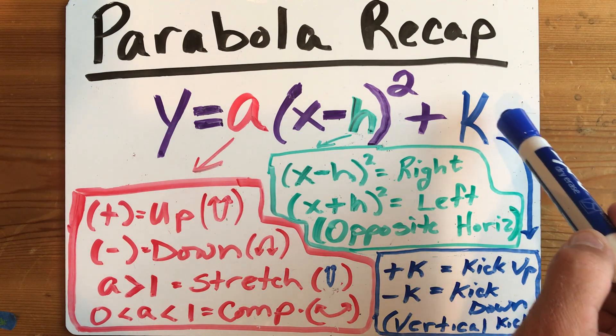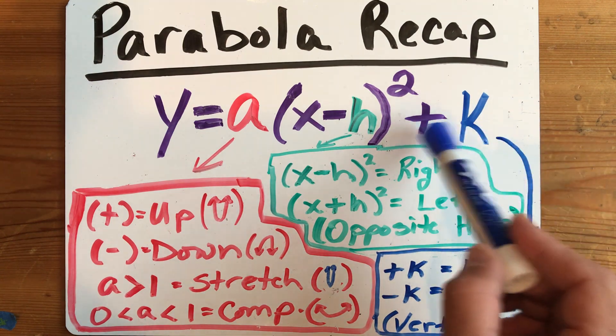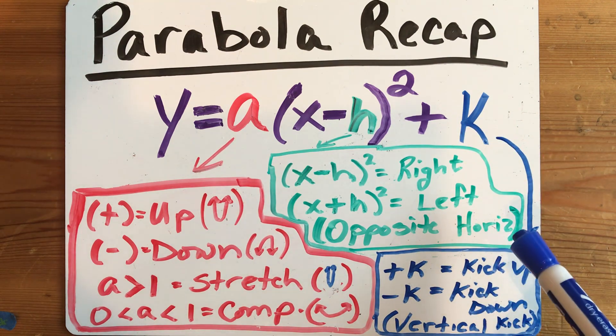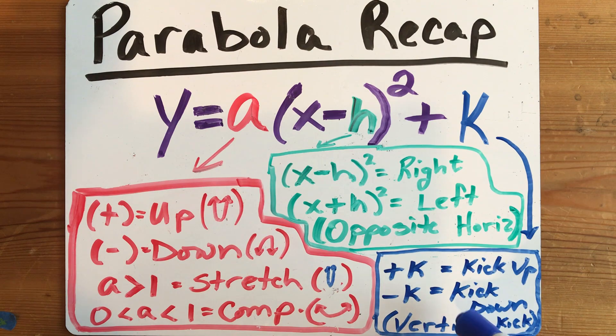The k is the vertical shift, and you're going to always keep that value the way you see it. So if it says plus 5, the graph will kick up 5 units. Or if it's minus 5 right here, the graph will kick down 5.